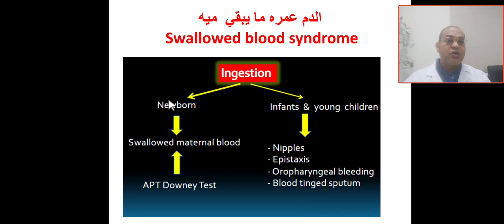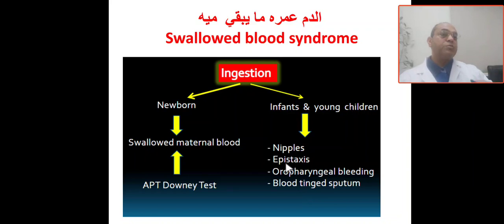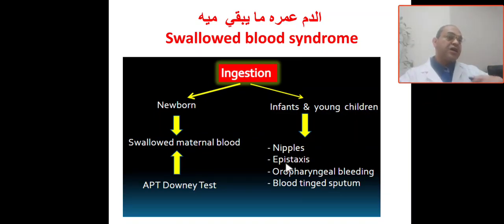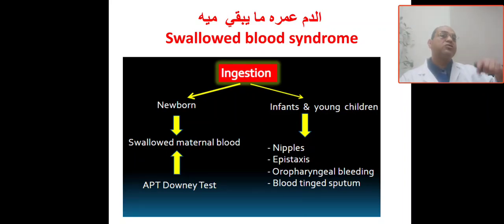This is ingested blood in the newborn or neonatal period — swallowed maternal blood. The diagnostic test is the Apt test. In infants and young children, sometimes the mother has a nipple fissure or cracked nipple, and the baby swallows blood during breastfeeding. You should also check the nipple or breast of the mother for any cracks or fissures, as this also indicates ingestion of maternal blood.